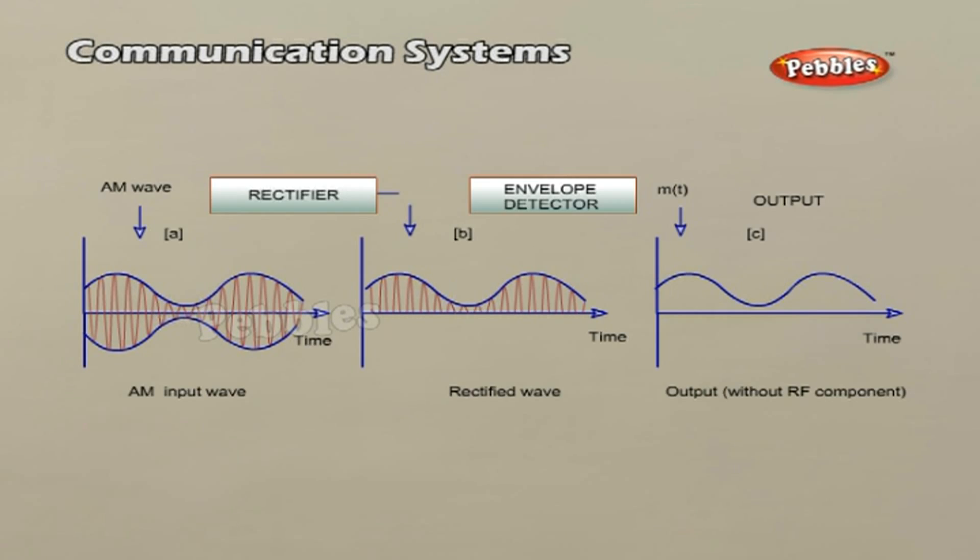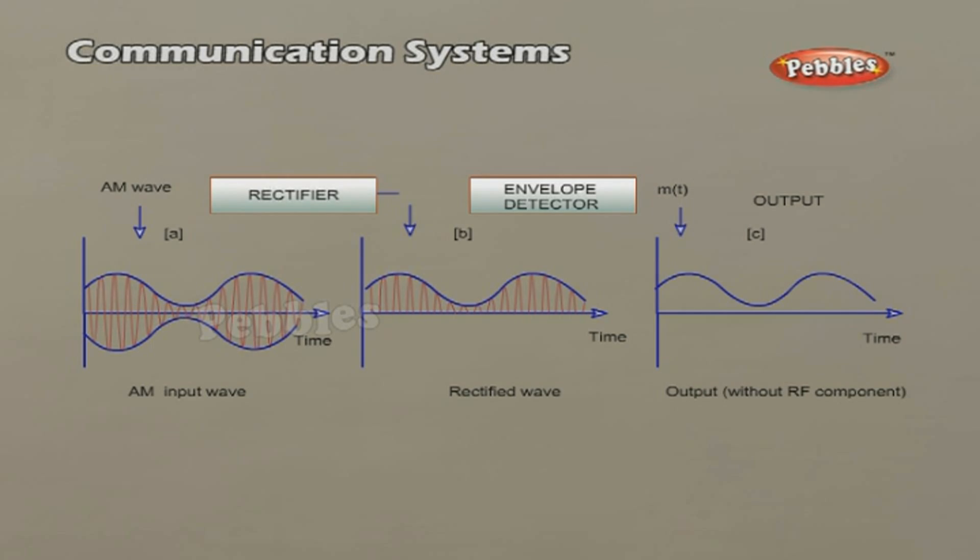The modulated signal of the form given in A is passed through a rectifier to produce the output shown in B. This envelope of signal B is the message signal. In order to retrieve m(t), the signal is passed through an envelope detector.